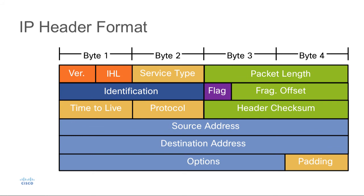The next field is the time-to-live field, or TTL. The TTL is used to make sure that a packet does not move through the network endlessly. If there's a routing loop, a packet could be sent back and forth over and over again, and without a TTL field the packet would never be discarded. The TTL value decrements at each Layer 3 hop — initially set to a number such as 30 — and once it reaches 0, the packet is discarded. This is a field that we can control in some implementations.